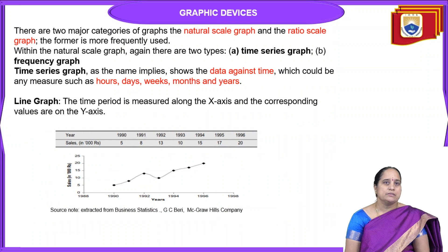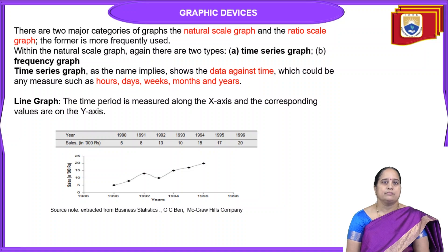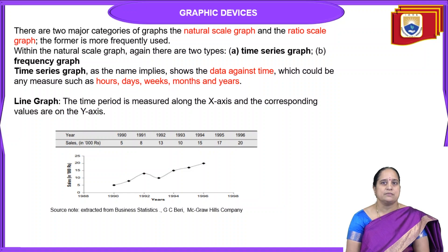Regarding graph devices, there are two major categories: the natural scale graph and the ratio scale graph. Most cases prefer the natural scale graph. Within the natural scale graph, there are two broad categories: time series graphs and frequency graphs. Time series graphs, as the name implies, show data against time, which could be measured in hours, days, weeks, months or years.